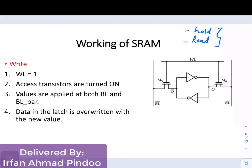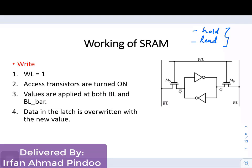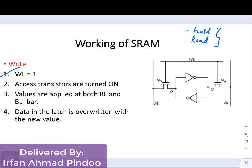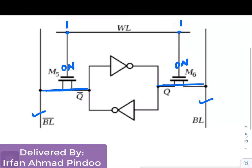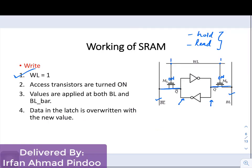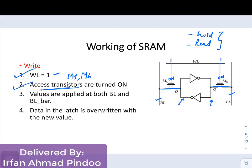In the write operation, the following steps have to be performed. The first step is WL equals 1, meaning the word line value is 1. Once the word line value is 1, this input is 1, which turns transistor M5 on and M6 also on. Once they are on, they behave as a short circuit, so bit line bar and bit line are now connected to our latch circuit. Once WL is 1, the access transistors M5 and M6 are turned on.